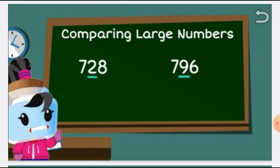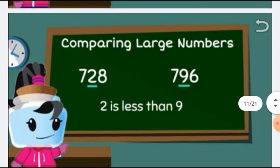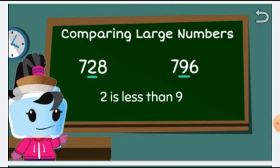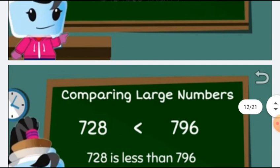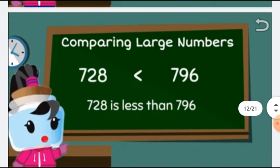Think — which is greater, 2 or 9? As you know, 2 is less than 9, that means 9 is greater than 2. So we will put this sign to show that 796 is greater than 728, or we can say that 728 is less than 796. Both statements are the same.